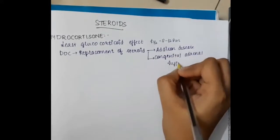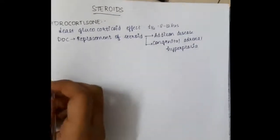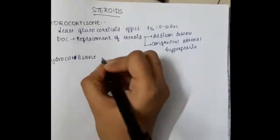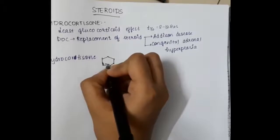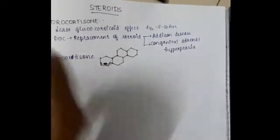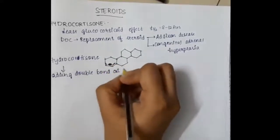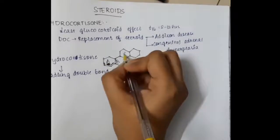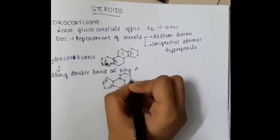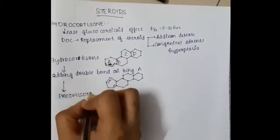Now let us learn how hydrocortisone gives rise to other types of steroids. Hydrocortisone has mainly four rings in its structure. If you add a double bond at ring A, this results in the formation of prednisolone or prednisone.